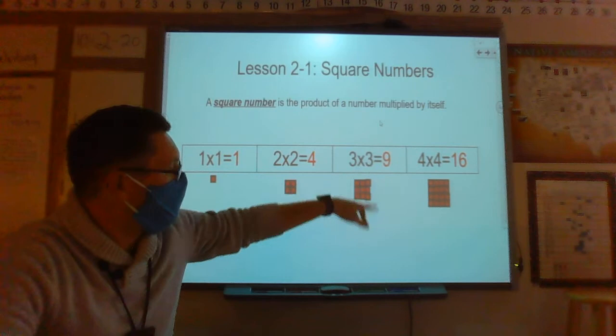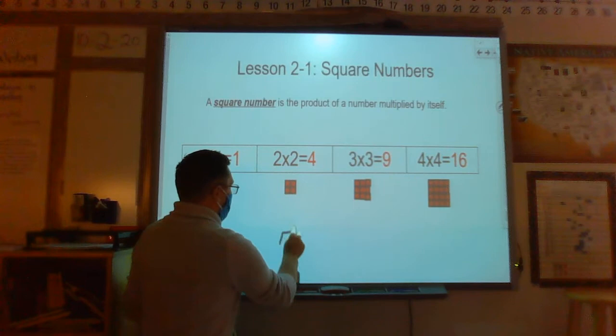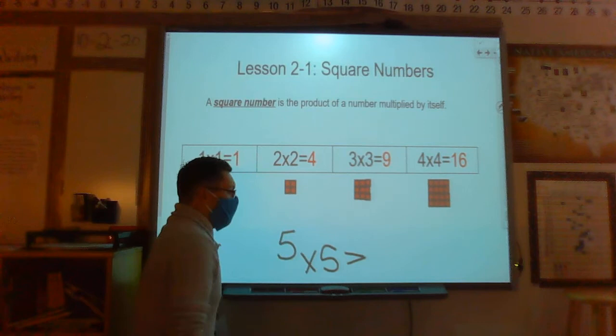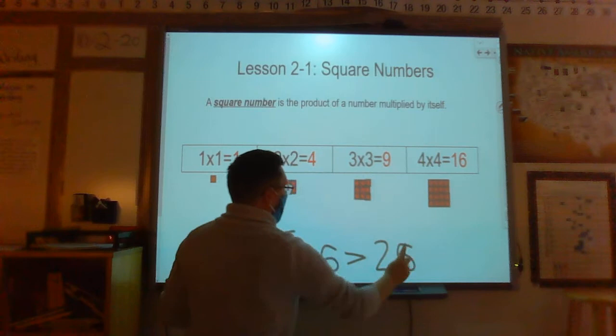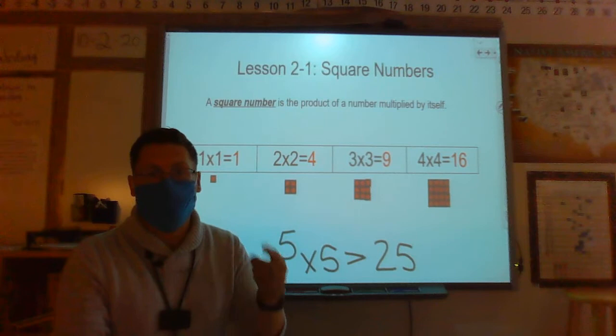So if I had a factor of 5 times 5, what would that equal? That would equal 25. My square number would be 25. My two factors would be 5 times 5.